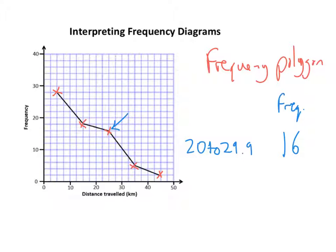Now if I just change the color and I'll do one more, so if we do say this last one here, that frequency is, what's that, two. But the group would be 40 to 49.9.